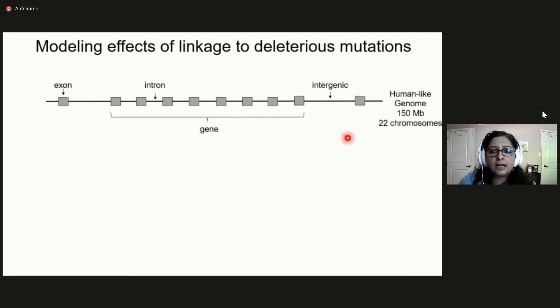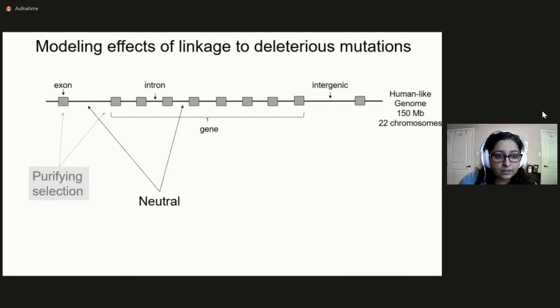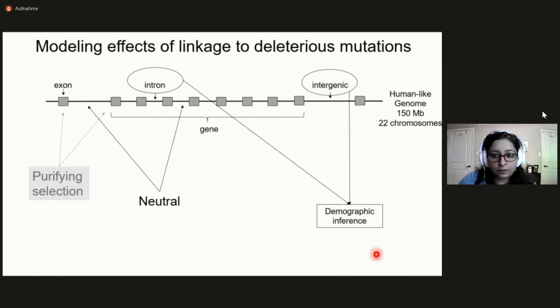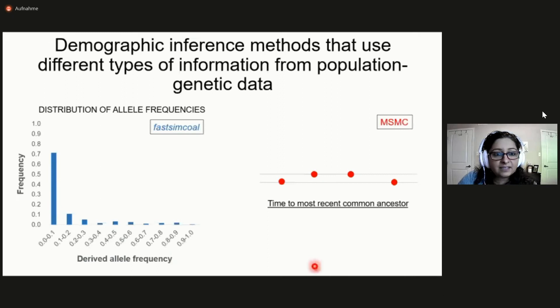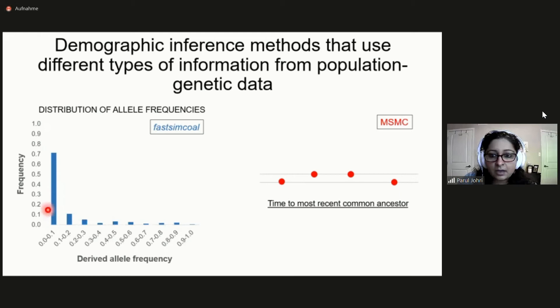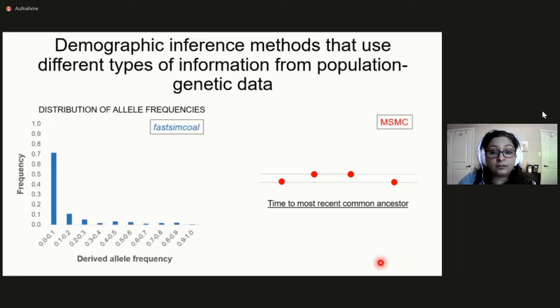The exons all experienced purifying selection, while introns and intergenic regions were completely neutral. We then used these neutral regions — introns and intergenic regions — to perform demographic inference, which is what people would normally do. We did that using two very different types of methods: FAS-SimCole, a method that fits models of population size change using the site frequency spectrum from the data; and MSMC, which is also very widely used. MSMC walks along a diploid genome and uses positions of homozygous versus heterozygous sites to infer the distribution of time to the most recent common ancestor, which can then be used to infer historical population sizes under a coalescent model of mutation and recombination.